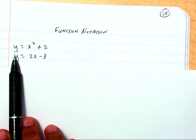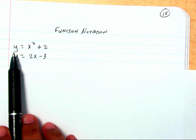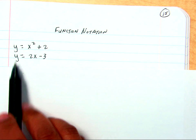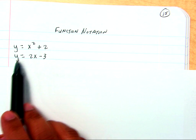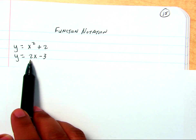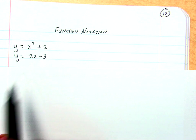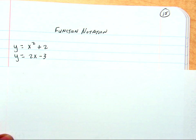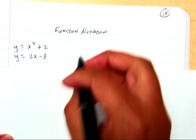So, usually when we have two graphs, or two equations, we'll say y equals 2x squared plus 2 and y equals 2x minus 3. Instead of saying y equals for both, what we do is we say Function Notation.